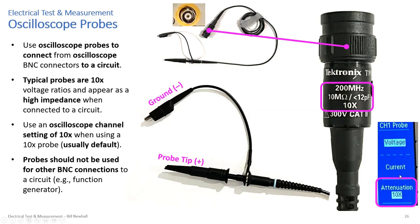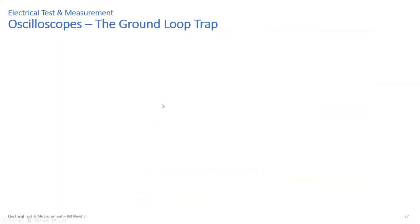Don't use probes as connections from a function generator or waveform generator to output a signal to your board — it won't work through the 10x probe. The center conductor of the probe is the probe tip, considered the positive side. The negative clip-on lead is ground. I'm calling it ground for a reason: I'm going to tell you about what I call the ground loop trap — a way you can get yourself in trouble with oscilloscope measurements.